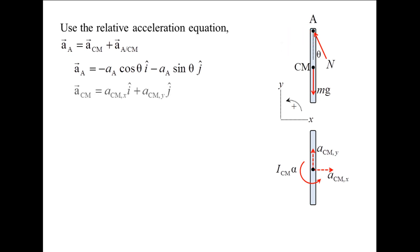ACM is decomposed into its x and y components. The relative acceleration term is decomposed into tangential and normal components. The tangential component is alpha cross RACM, the position vector from the center of mass to point A. The normal component is the angular velocity of the rod, omega, cross the quantity omega cross RACM. The angular velocity is zero at that instant since the rod starts from rest. The angular acceleration vector has the magnitude of alpha and points in the z direction. RACM starts at the center of mass and terminates at point A. Point A is located one-half L up from the center of mass.